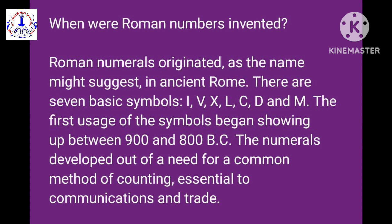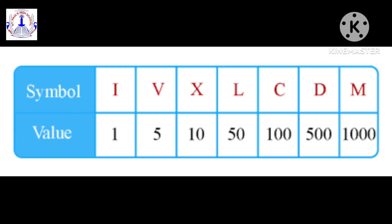These are the seven symbols we are writing in Roman numerals: I, which represents 1; V, which represents 5; X, which represents 10.